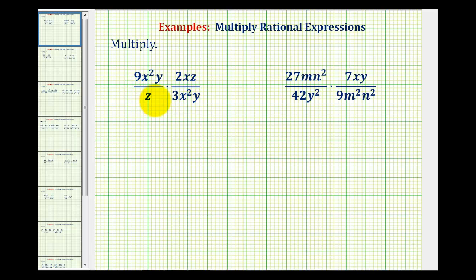So to find all the common factors between the numerators and denominators that we'll simplify to one, we're going to write everything out in prime-factored form. So for 9x²y, since nine is equal to three times three, we'll write three times three, and then for x squared, we'd have two factors of x, and we have one factor of y as well.